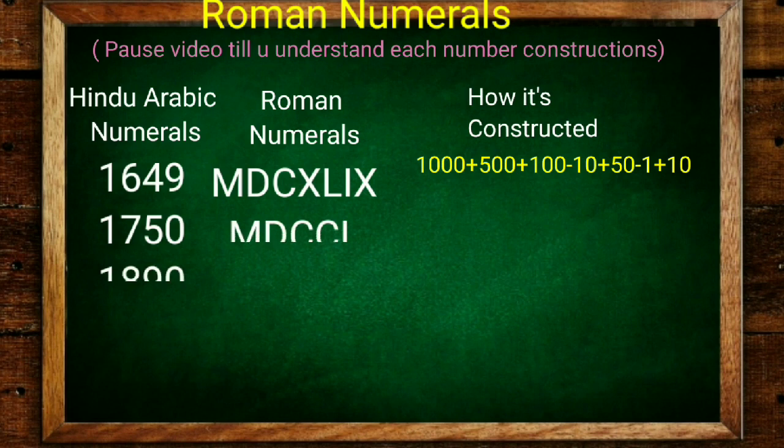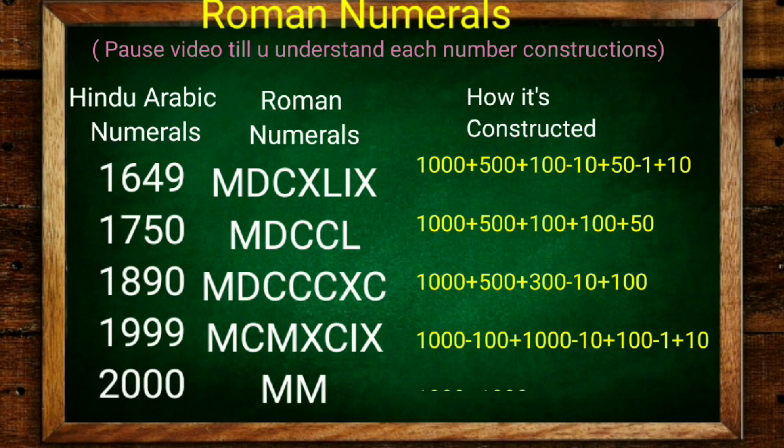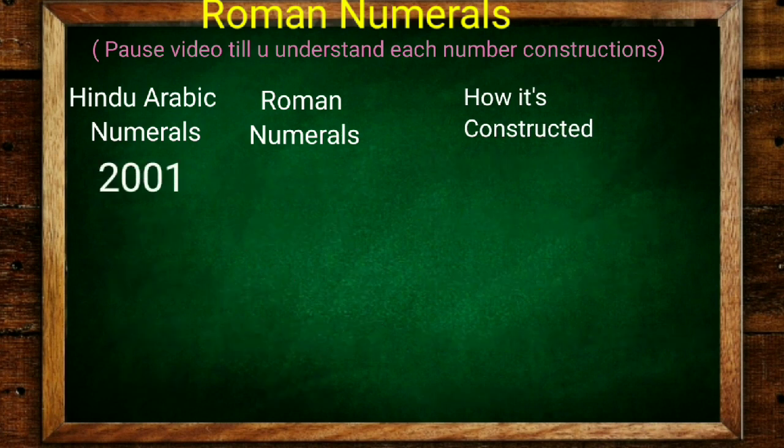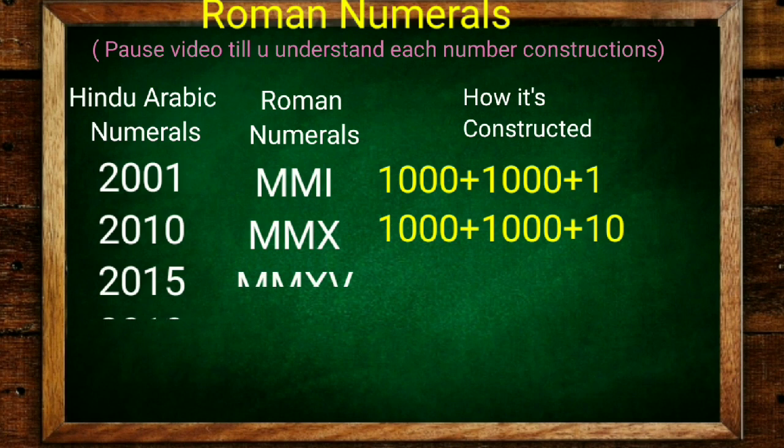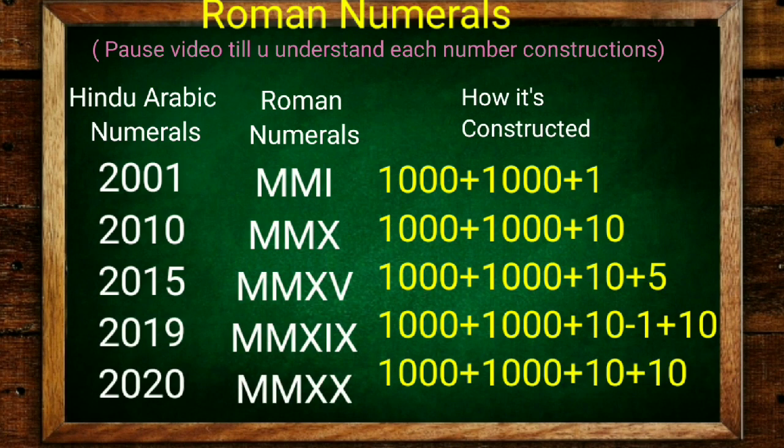Here is 1649, 1750, 1890, 1999 - special numbers, check it. And 2000 is double M, 1000 plus 1000. 2001 is 1000 plus 1000 plus 1. 2010 is 1000 plus 1000 plus 10. 2015 is 1000 plus 1000 plus 10 plus 5.